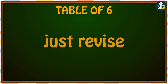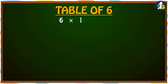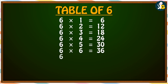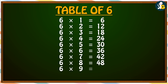Just revise. 6 times 1 is 6. 6 times 2 is 12. 6 times 3 is 18. 6 times 4 is 24. 6 times 5 is 30. 6 times 6 is 36. 6 times 7 is 42. 6 times 8 is 48. 6 times 9 is 54. 6 times 10 is 60.